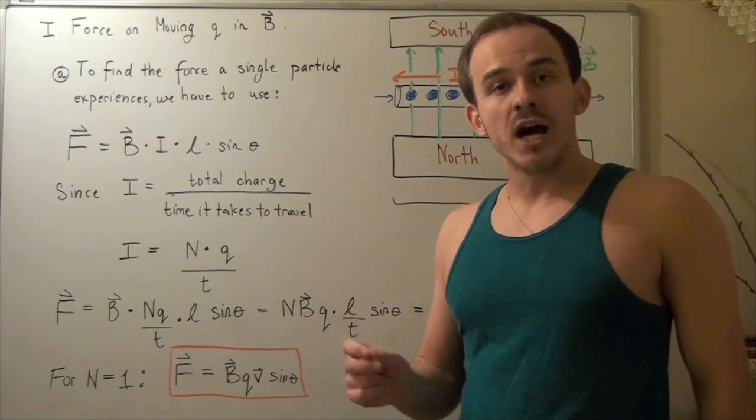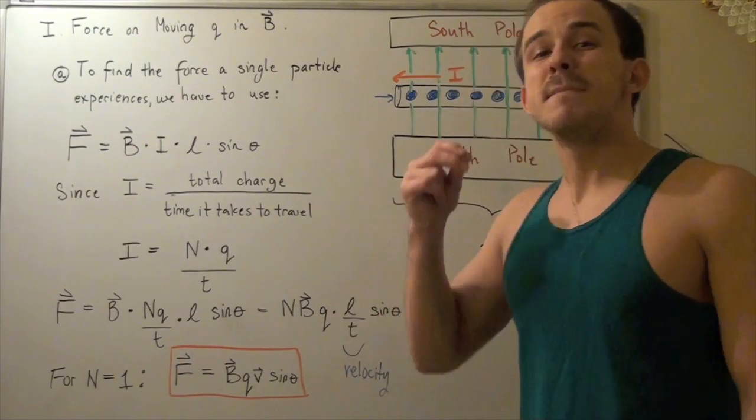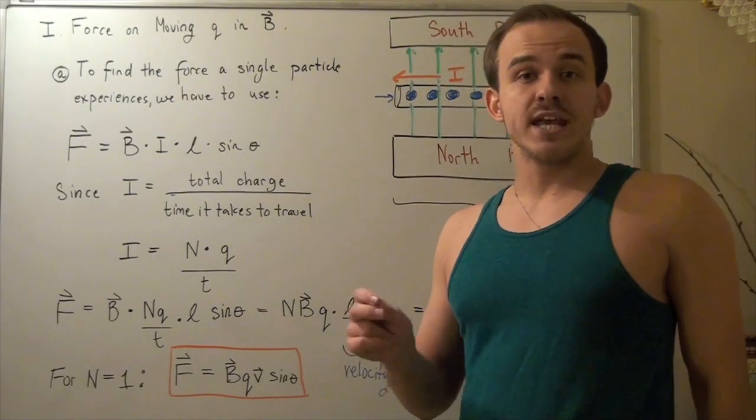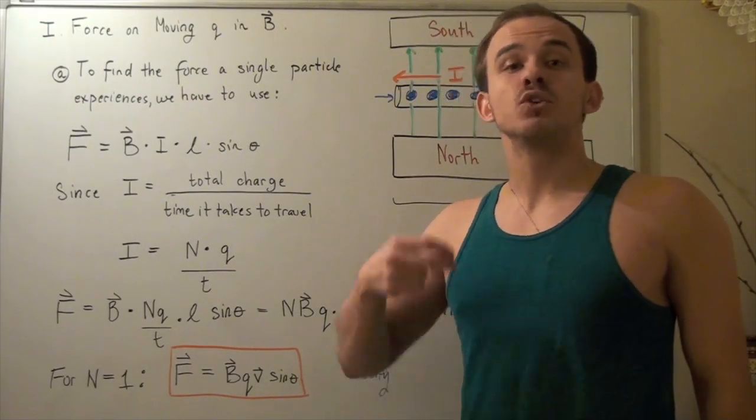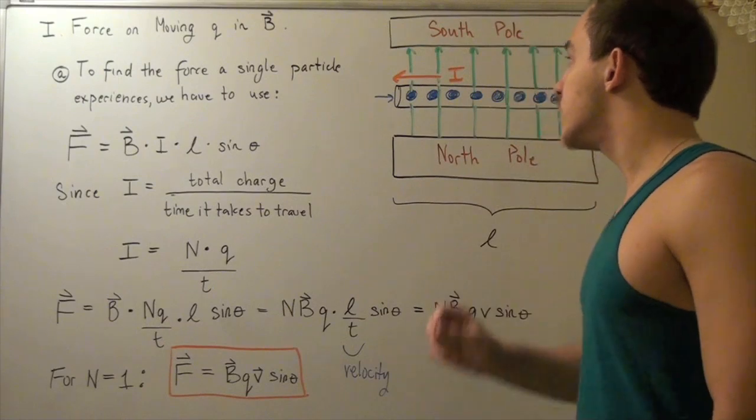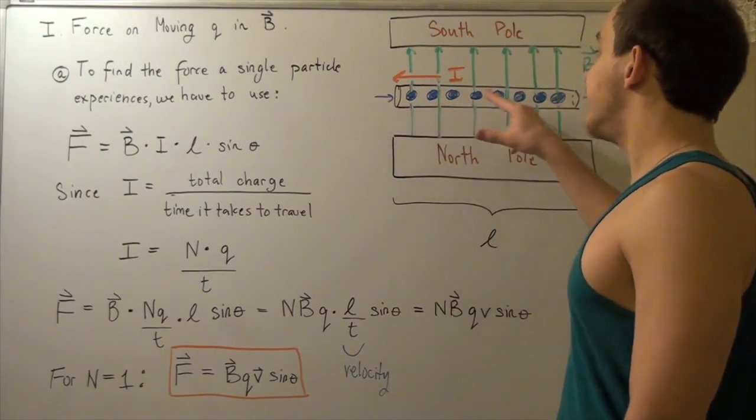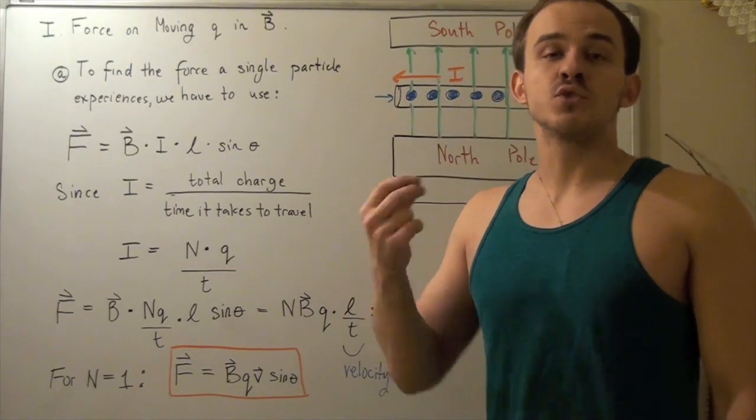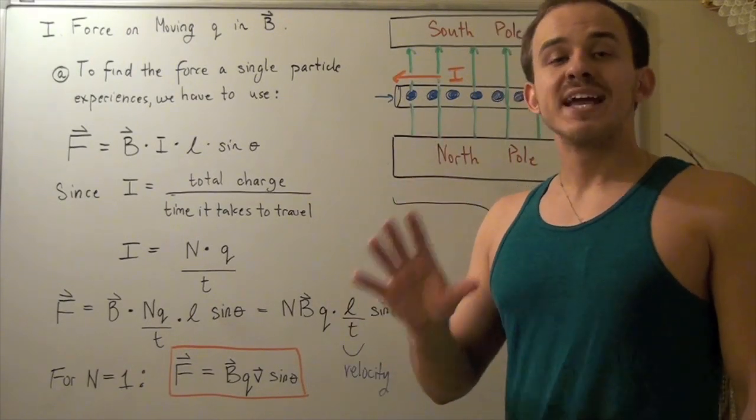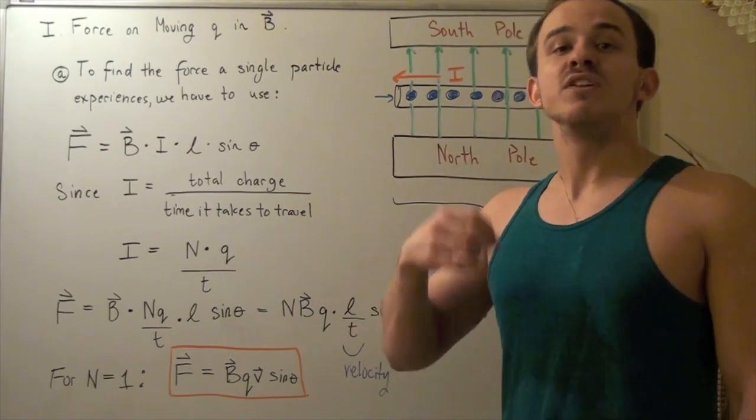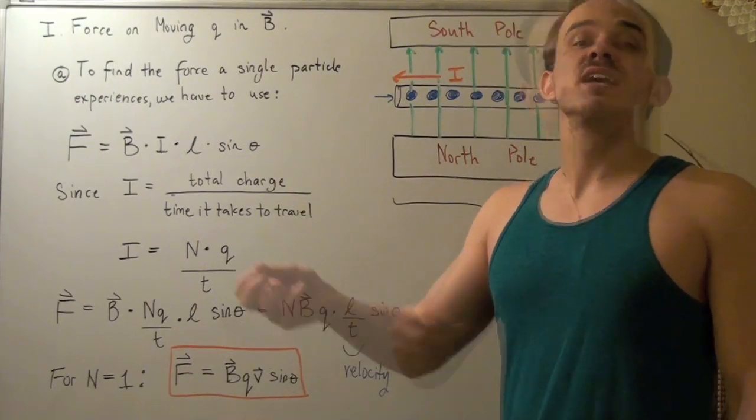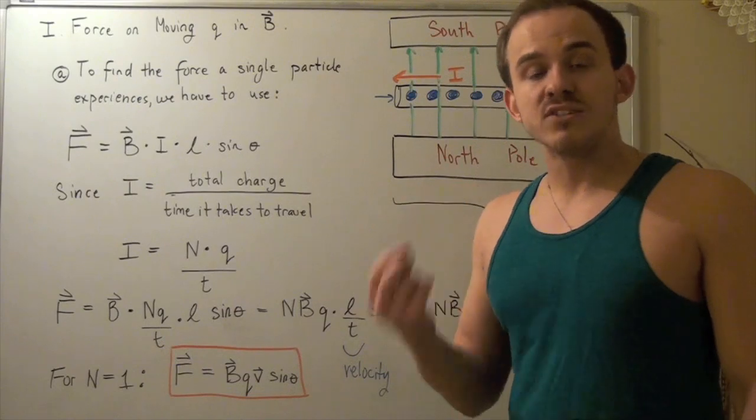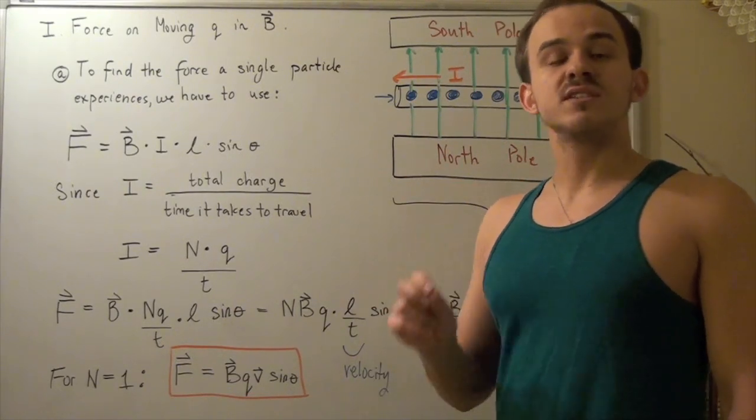If no work is done, then the velocity, or the magnitude of my velocity, the speed does not change. What changes is my direction. So, if my particle is traveling in this magnetic field, what won't change is the speed with which it travels. What will change is our direction. And so, velocity will change because direction changes. But the speed will remain the same. The magnitude of our velocity will stay the same.